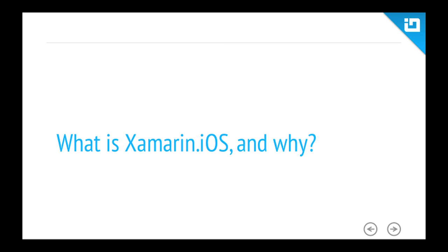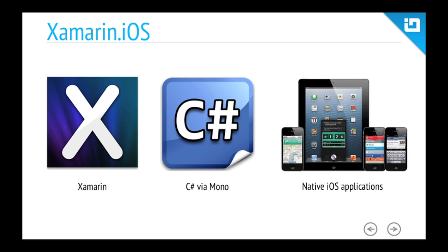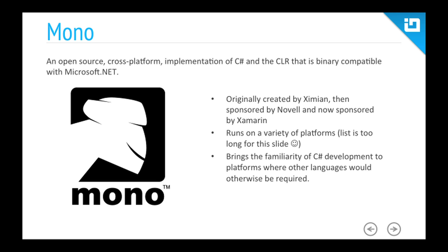What is Xamarin.iOS and why might you want to use it? Xamarin.iOS is a solution from Xamarin that allows you to use C# with their Mono runtime to build native iOS applications that run on the iPad, iPod Touch, iPhone, and perhaps future devices. Mono itself is a platform worth understanding here.